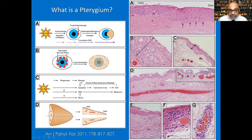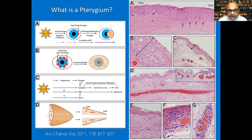This elastotic degeneration is very commonly seen due to age-related changes or UV exposure. Freckles that develop due to old age or chronic sun exposure demonstrate a very similar change in the epidermis of the skin. This similarity gave rise to the theory that a comparable change must be causing pterygium in the eyes, leading to the most accepted theory today: UV exposure as the primary driver of pterygium pathogenesis.